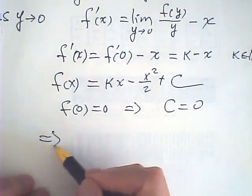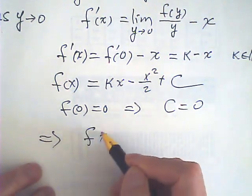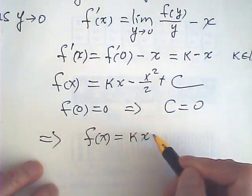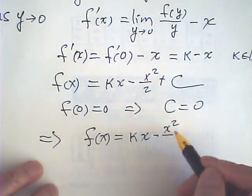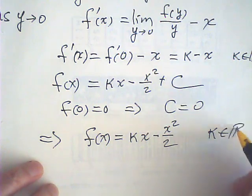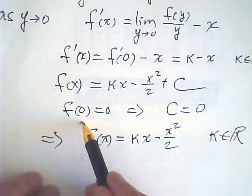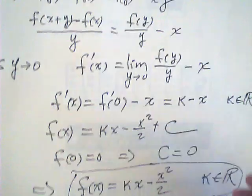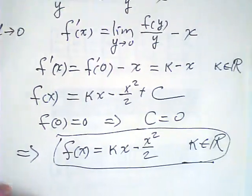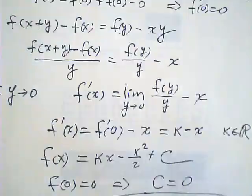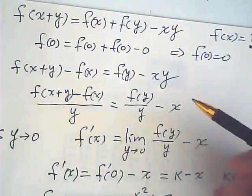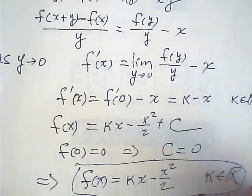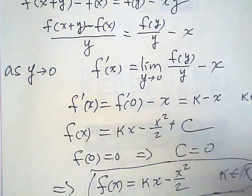So, we find, therefore, f of x is equal to Kx minus x squared over two, where K is a real number. So, that is the answer for this question. I think, in my way, is quite neat and shorter.